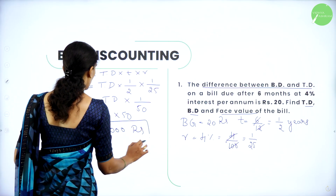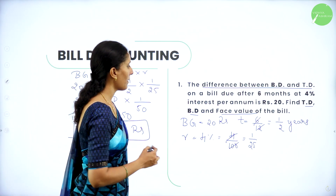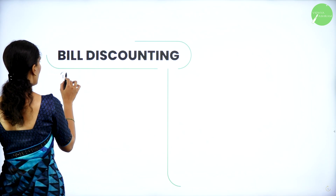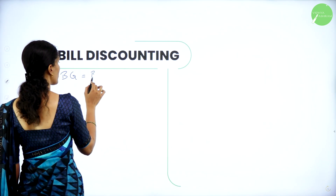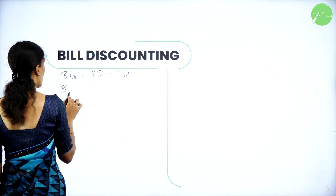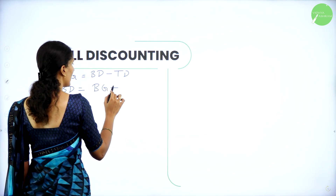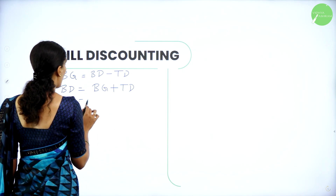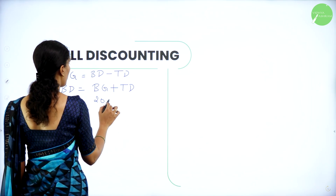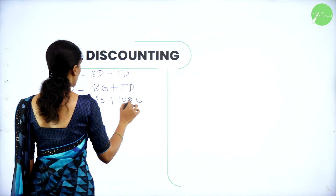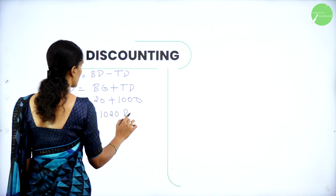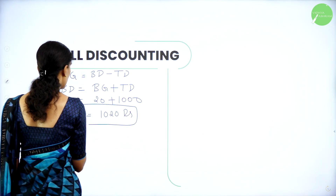So therefore, true discount is equal to Rs. 1000. Now you have what is true discount. Let us calculate banker's discount and face value of the bill. We know the formula — banker's gain is the difference of banker's discount and true discount. So banker's discount equals banker's gain plus true discount: 20 plus 1000, so banker's discount is Rs. 1020.